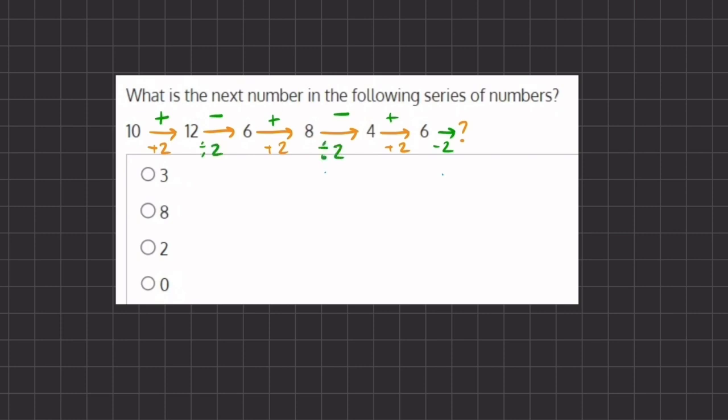And so instead of this subtraction, we can try to divide by 2. And 6 divided by 2 gives us 3. And that does show up in one of our answers and does match a pattern in the series of numbers. And therefore, 3 will be the next number in the series. And that corresponds with answer A.